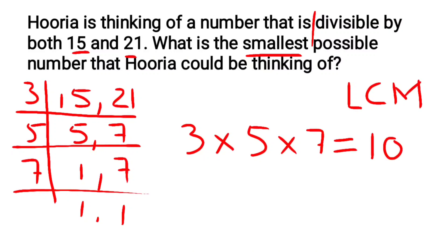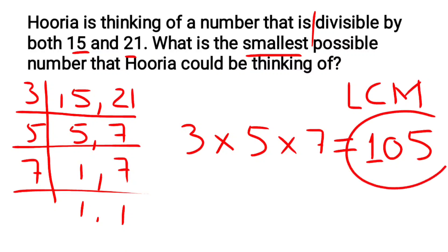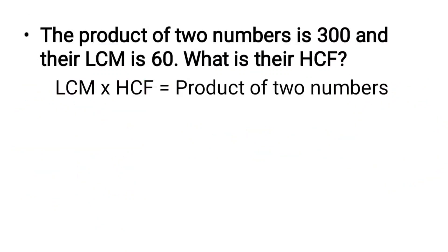So this is 105. The smallest number that Horya could be thinking of is 105. Next problem: the product of 2 numbers is 300.